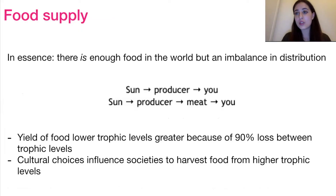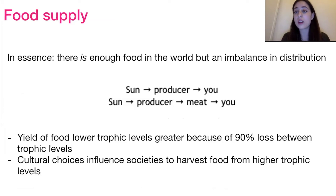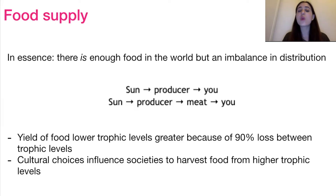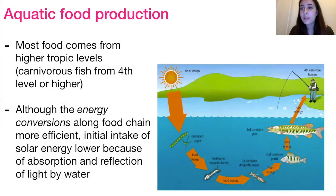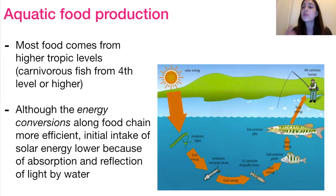The main message when it comes to food production systems is that there is enough food but an imbalance in how it is distributed. There's also an issue where cultural factors influence our decisions when it comes to harvested food, leading to a large type of harvesting from higher trophic levels. If you remember from topic two, there's very inefficient transfer of energy between trophic levels, which means by the time you get to our trophic level, we've already lost a lot of energy in between those previous trophic levels as there's 90% energy loss between them. Aquatic food production systems are interesting because most food comes from higher trophic levels, so minimum fourth or higher. Although the conversions between trophic levels is more efficient in water systems, the initial intake of energy is lower because of absorption and reflection of solar energy by water.